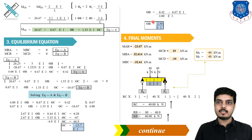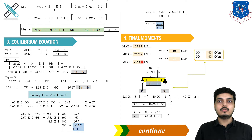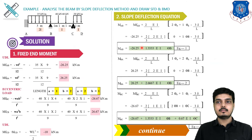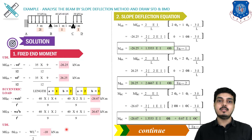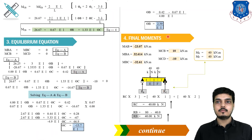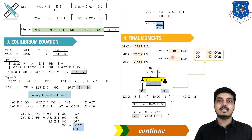Next step is to find the final moments by placing the θB and θC values into all slope deflection equations. There are 4 equations — Equations 1 through 4 — giving MAB, MBA, MBC, and MCB respectively. MCD is directly −10 from Step 1. As a check, the summation of moments at each joint equals zero: at B, MBA + MBC = 0 ✓; at C, MCB + MCD = 0 ✓. The calculation is correct.